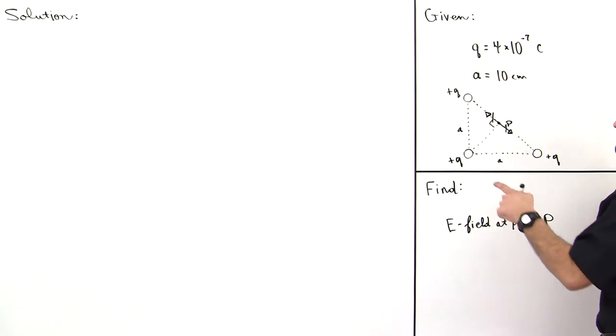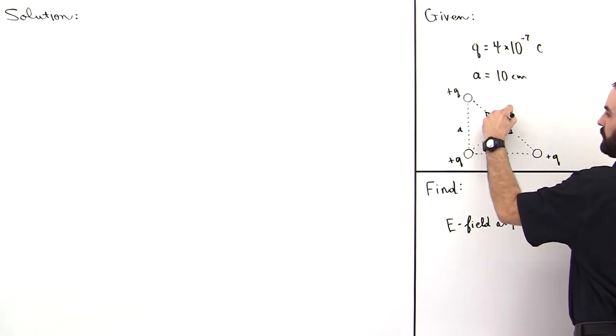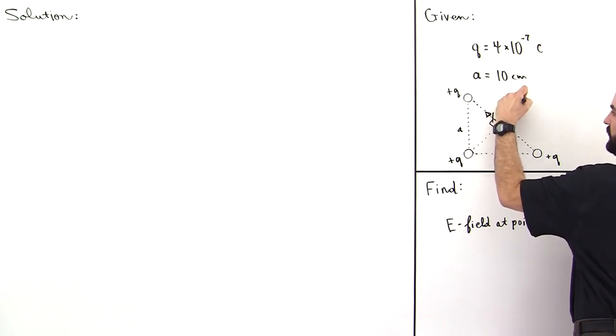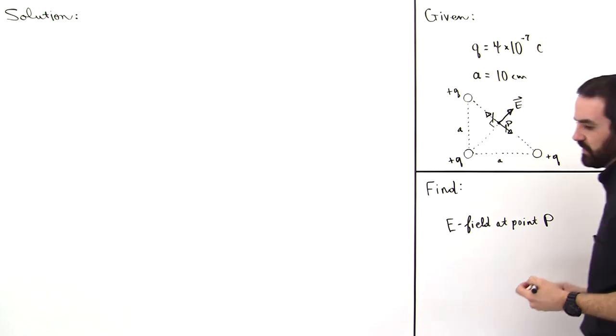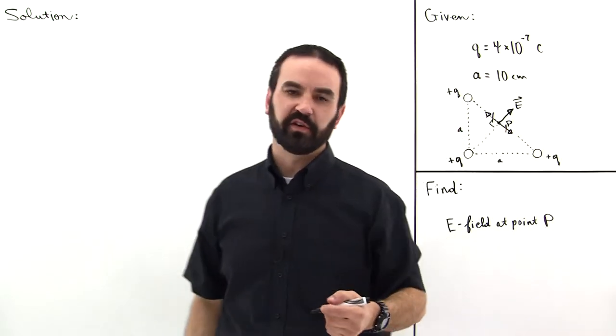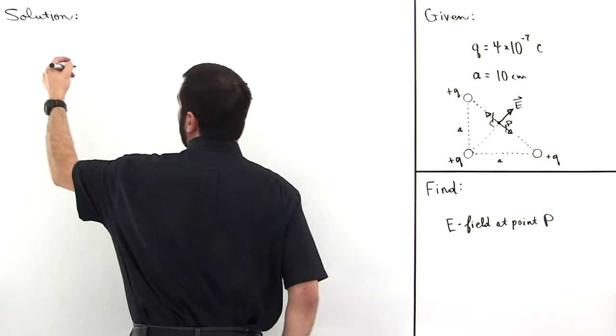So the E field is just going to be due to this positive charge right here, so we can just sketch it like that and so the E field is going to be like that. And the E field is a vector, so we have to represent it in unit vector notation.